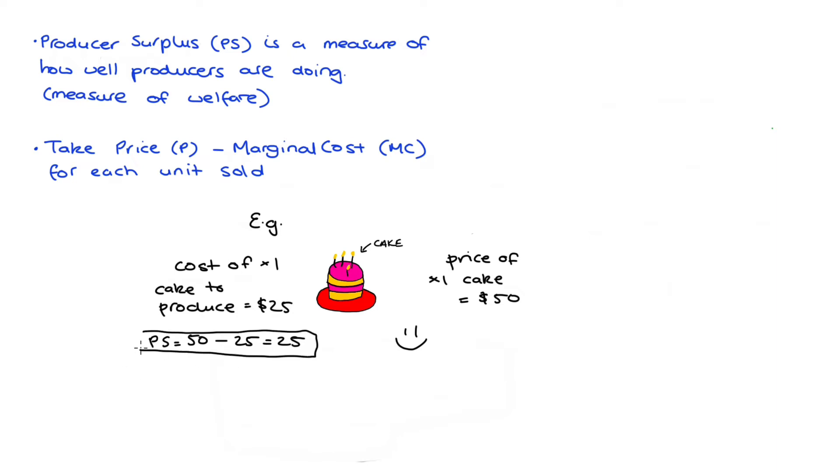In economics, we model the producer as one that always wants to increase their producer surplus, so is always preferring more producer surplus to less. This gives some structure to the intuitive idea that higher prices are good for the producer because holding everything else equal, if we increase prices, we increase producer surplus.